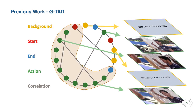Let's start from our own work, GTAN. In GTAN, we propose a graph convolutional network model to adaptively incorporate multi-level semantic contexts into video features. GTAN casts temporal action detection as a subgraph localization problem. Specifically, we formulate video snippets as graph nodes, snippet-snippet correlations as graph edges, and the action associated with its context as target subgraphs.